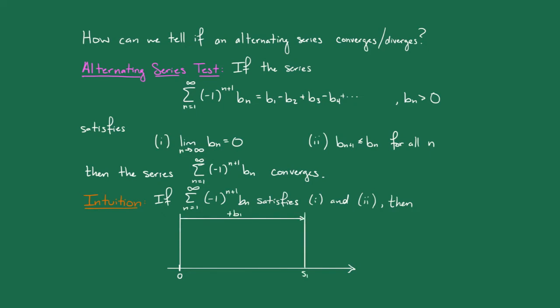From there, to get the second partial sum, we subtract b2. However, since the bn are decreasing, we could not have made it all the way back to 0.